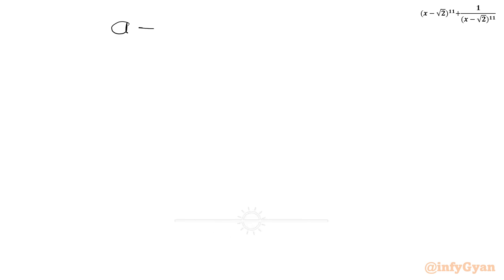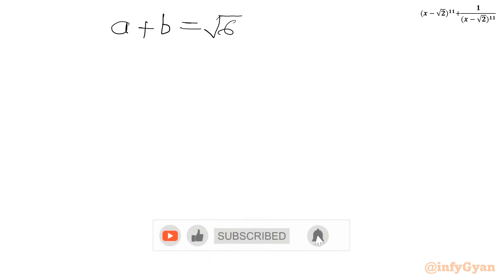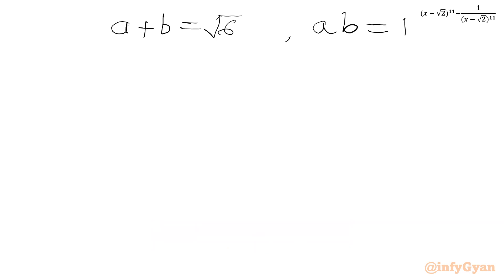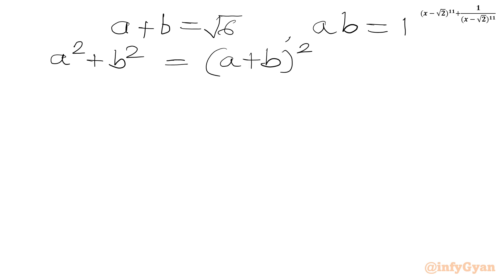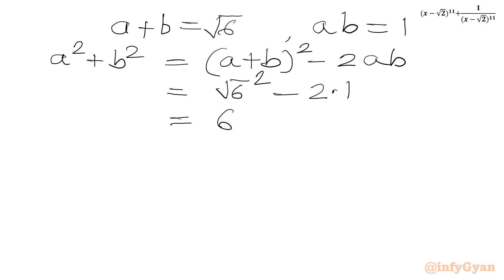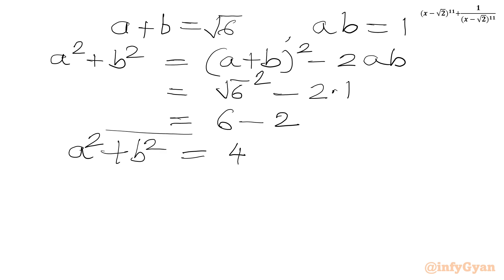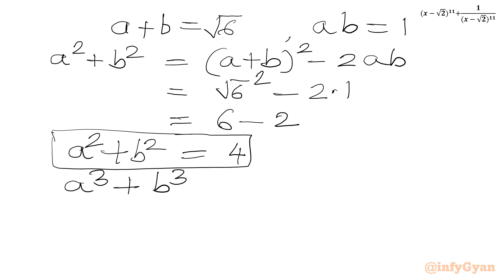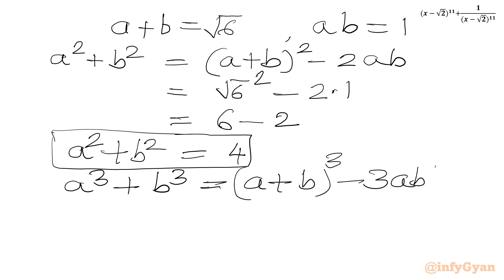So our two equations are: a plus b equals root 6, and a times b equals 1. Now let us calculate a squared plus b squared first. Using the formula (a + b)² minus 2ab, we get root 6 squared minus 2 times 1, which equals 6 minus 2 equals 4. So a squared plus b squared equals 4. Now I will use the identity for a cubed plus b cubed, which equals (a + b)³ minus 3ab(a + b).